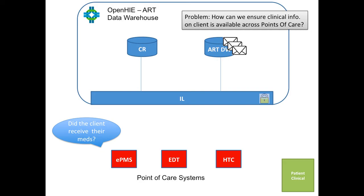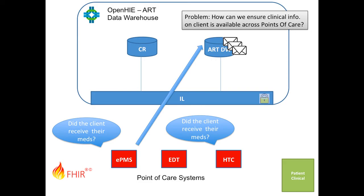Once we have that data in the ART data warehouse, we can start asking questions. We can query the ART data warehouse — for example, the EPMS system can ask, did the client receive their meds? It can use the FHIR standards to query the ART data warehouse using the referenced client and look at the medications they've taken, ensuring the client is proceeding along with their care treatment plan. The HTC system can also ask the same question of the ART data warehouse, again using the FHIR standards. We're not having to implement multiple API and data integration standards for various systems — we're going to the central repository, which reduces deployment costs significantly.